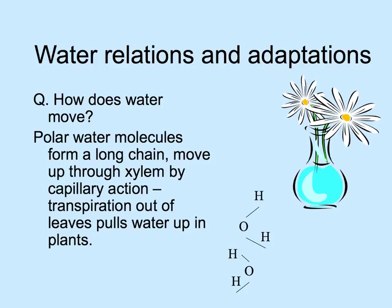Water moves through a plant because water molecules are polar — with a little positive charge by the hydrogens and a little negative charge by the oxygen — so adjacent molecules are linked to each other with a slightly weaker force than within the molecule. This lets water rise by capillary action and through the tiny tubes of the xylem. As water evaporates from the surface of the plant out the stomata by transpiration, these long chains of water molecules move up the stem of the plant.